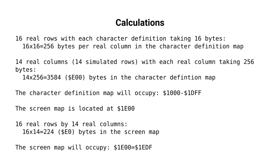So the character map just fits before the screen map, and then the screen map itself only needs 16 real rows by 14 real columns, and therefore only uses 16 × 14 = 224 bytes.